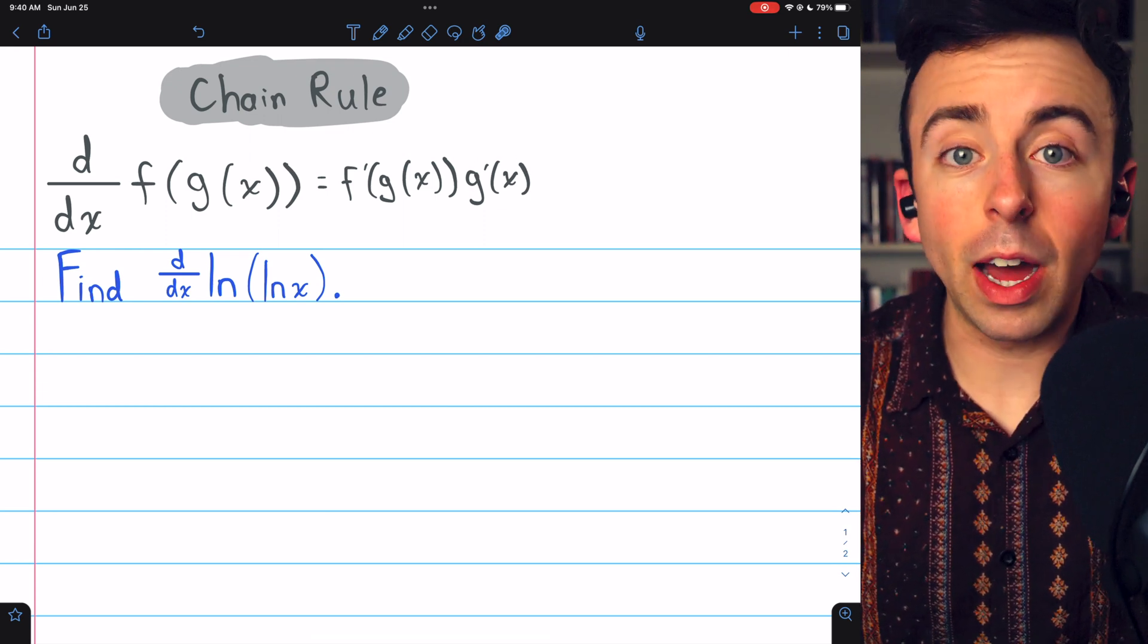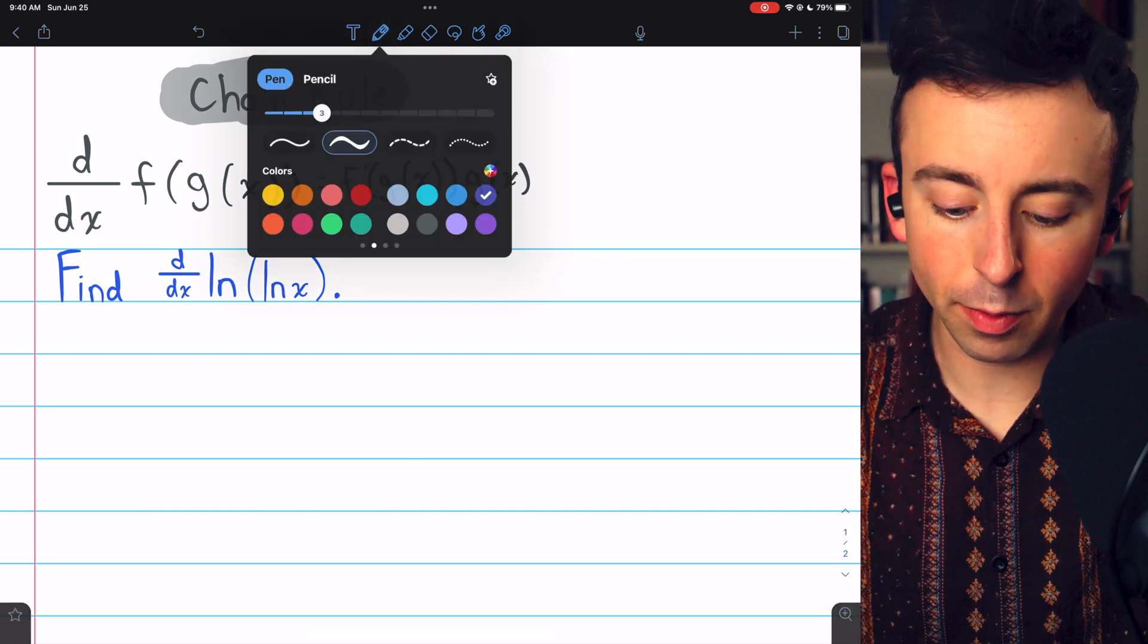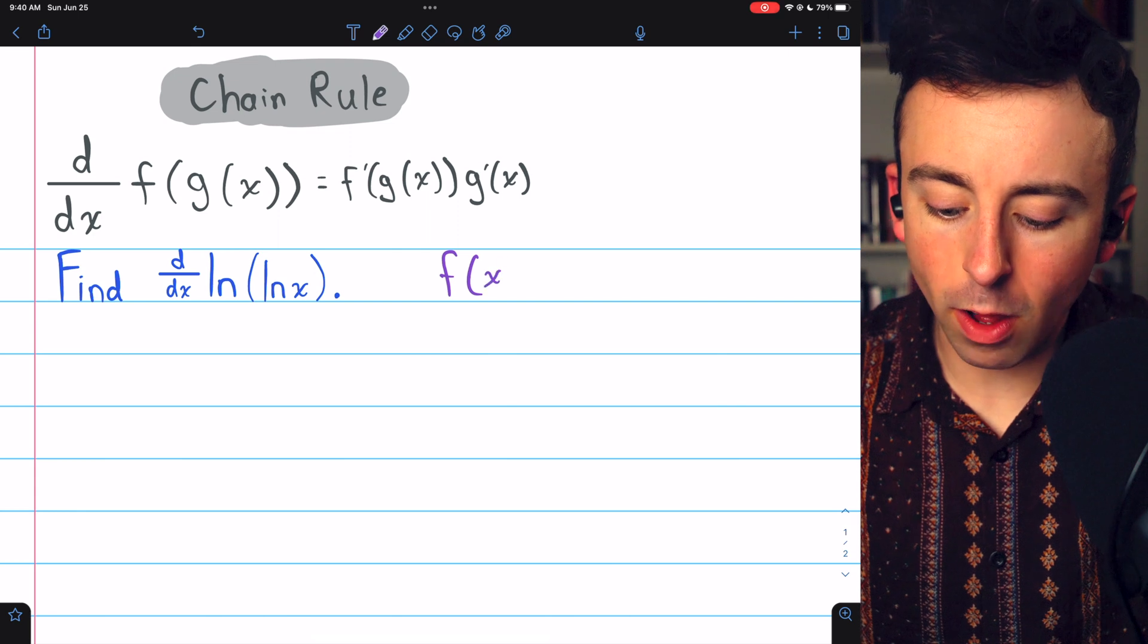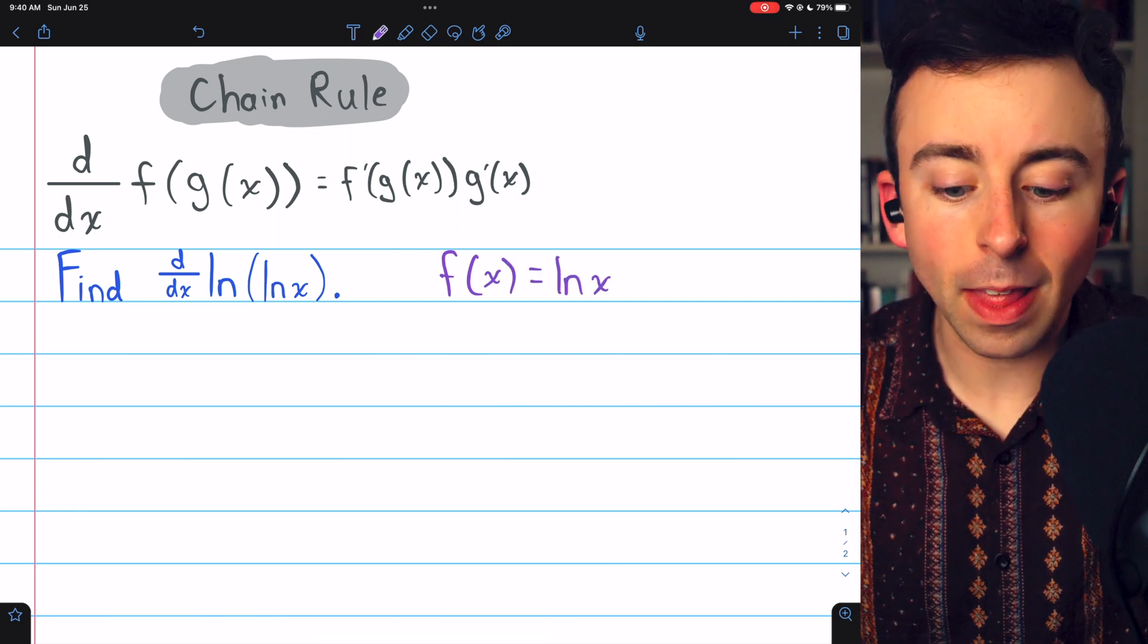So if we can accurately identify our outside and inside function, we'll easily be able to take the derivative. In this case, the outside function, which we might call f of x, is just the natural log of a thing, ln(x).